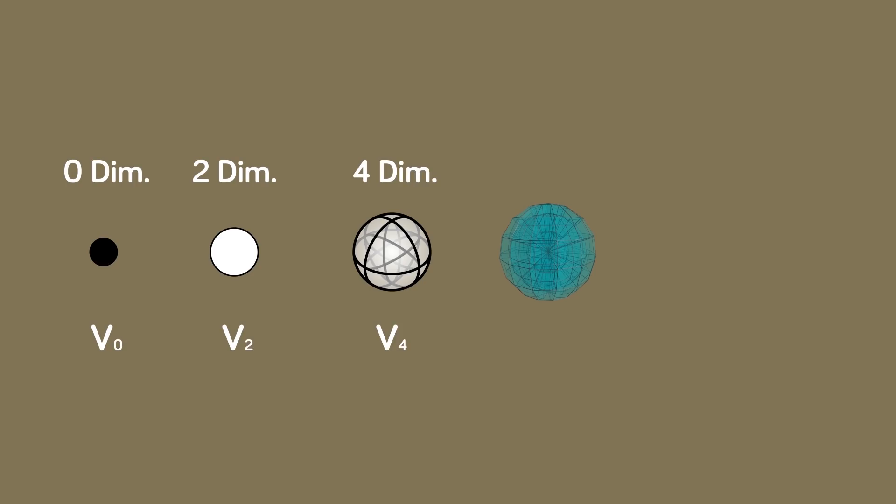In a recent video, I mentioned how if you add up the volume of every even dimensional sphere with radius 1, you get e to the pi. But here I want to quickly explain why that is the case, just because I found it pretty interesting.